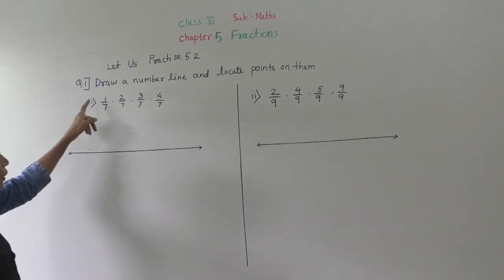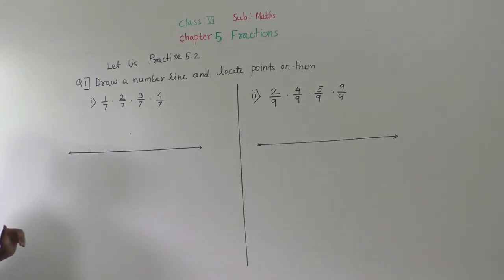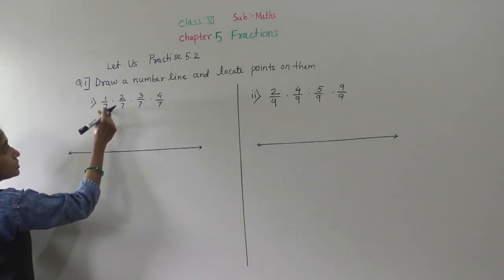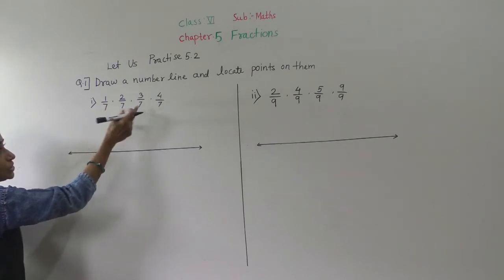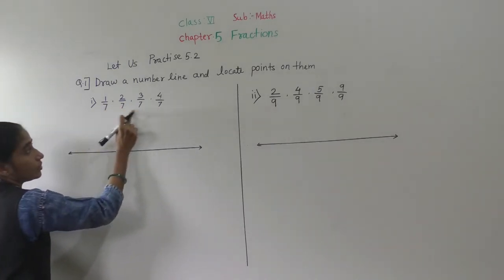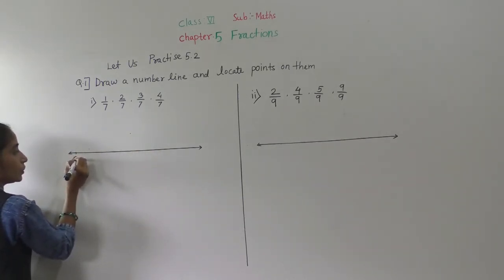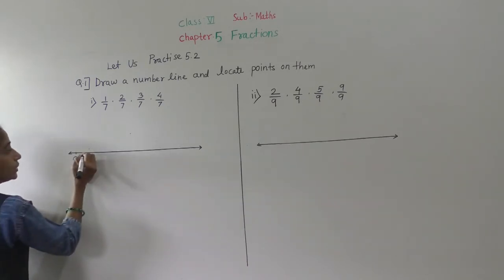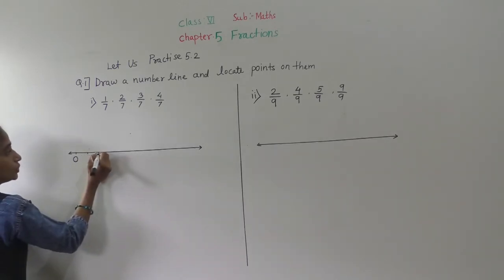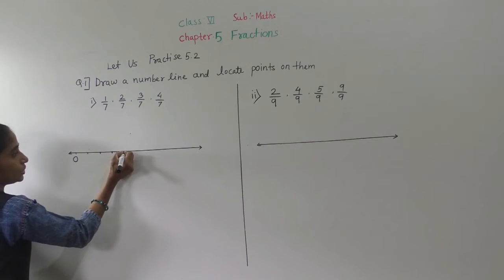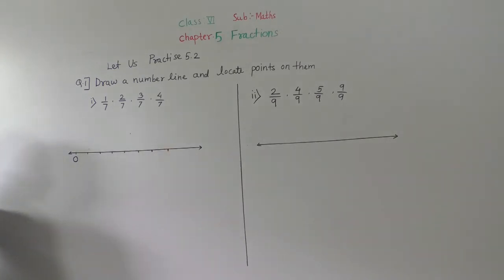Practice 5.2: Draw a number line and locate points on them. Given fractions: 1 upon 7, 2 upon 7, 3 upon 7, and 4 upon 7. Total parts are 7 — denominator is 7 everywhere. Draw a number line, represent 0, then divide into 7 equal parts: 1, 2, 3, 4, 5, 6, 7.